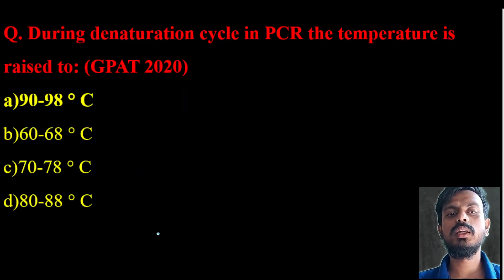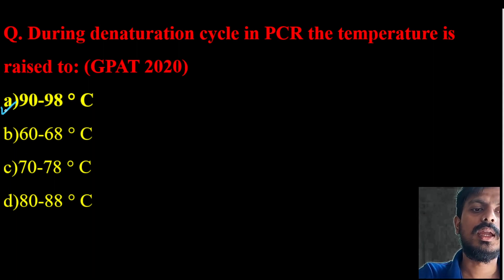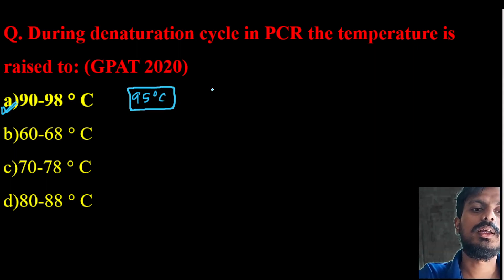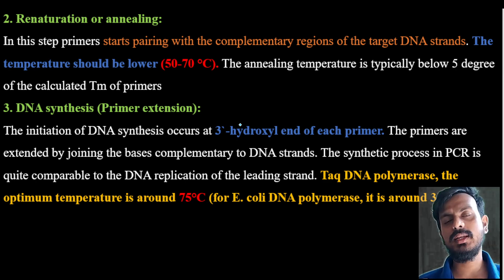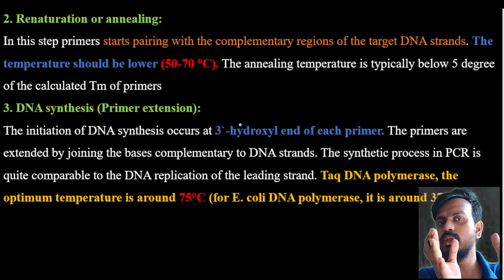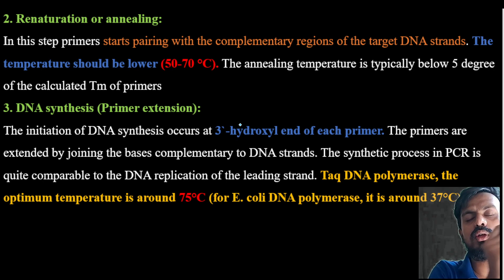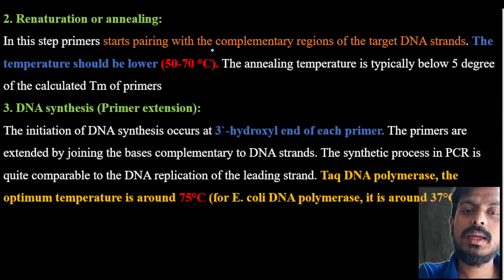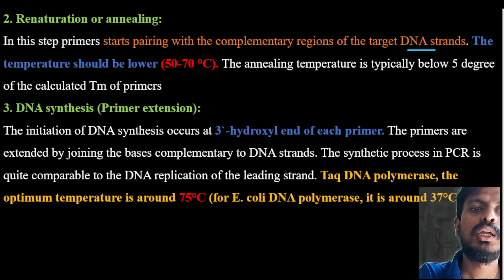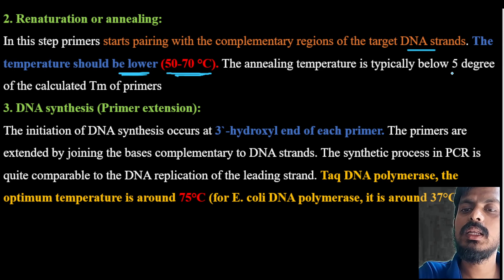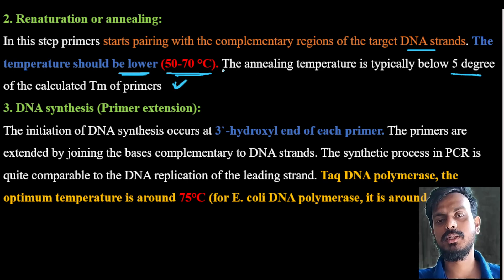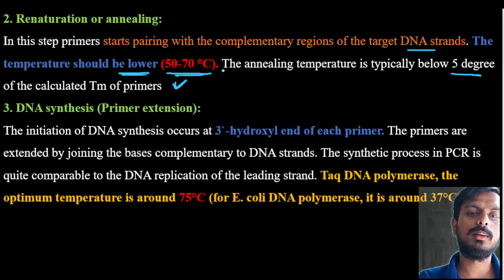This question was asked in GPAT 2020: during the denaturation cycle, the PCR temperature rises to what degree? The correct answer is 90 to 98 degrees centigrade, around 95 degrees. After denaturation, the next step is annealing, where the primer binds to the separated DNA strand. The temperature should be lower — around 50 to 70 degrees. The annealing temperature is typically 5 degrees below the Tm (melting temperature) of the primer.